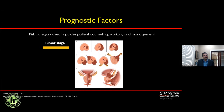Looking at T-staging: T1 disease is not visible on MRI. T2 describes tumor confined to the gland — T2A is a very focal lesion, T2B involves up to half the gland, and T2C involves more than half or both sides. T3A is tumor beyond the prostate into periprostatic tissue, T3B involves the seminal vesicles. T4 involves the bladder wall, rectal wall, or levator diaphragm. These are the key T-stage distinctions.